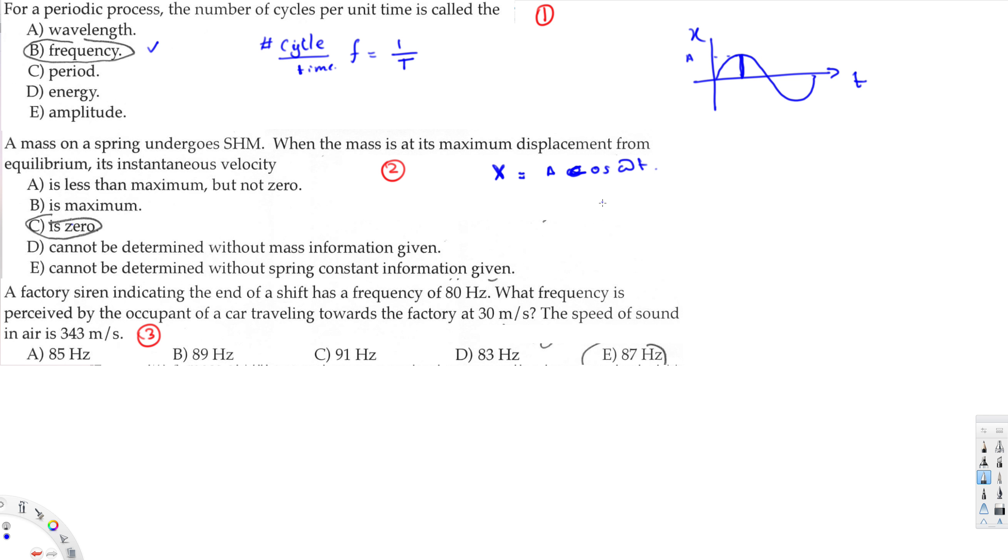Because cos zero is one, right? So cos zero is one, and that's what makes x equal to A. So at that maximum point, x equals A, omega t equals zero. They're asking what's the velocity at that point. To find the velocity, I have to get a velocity equation.